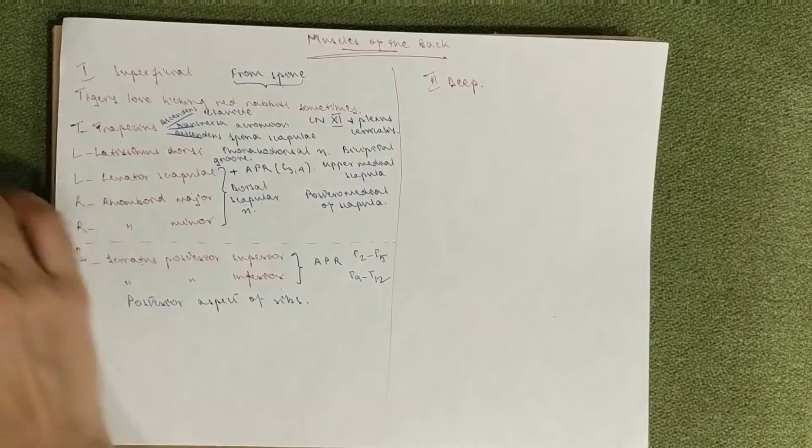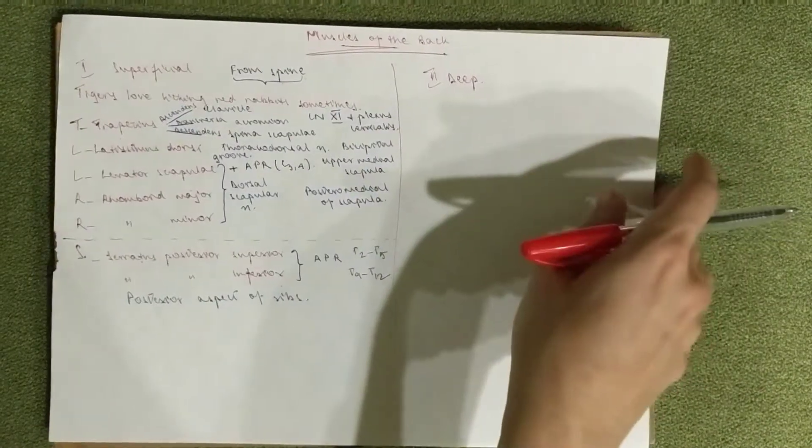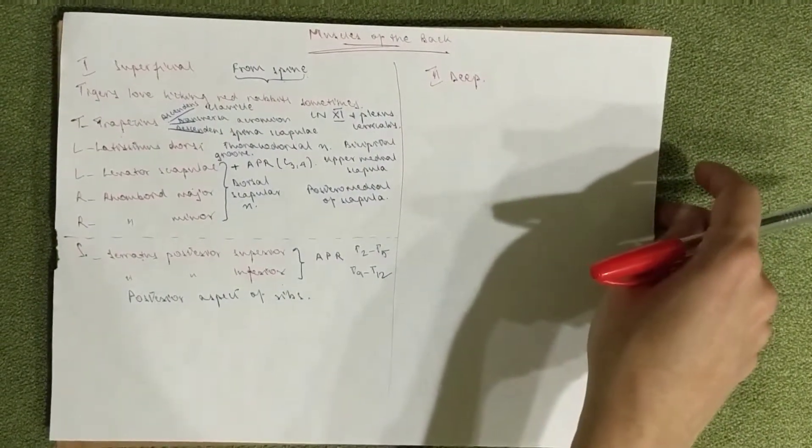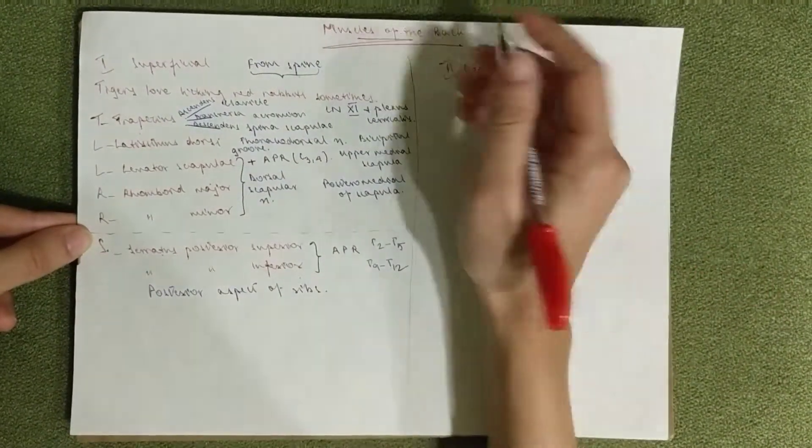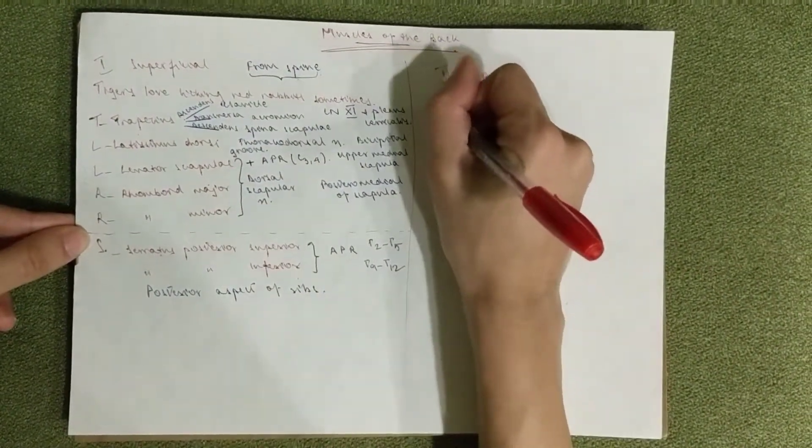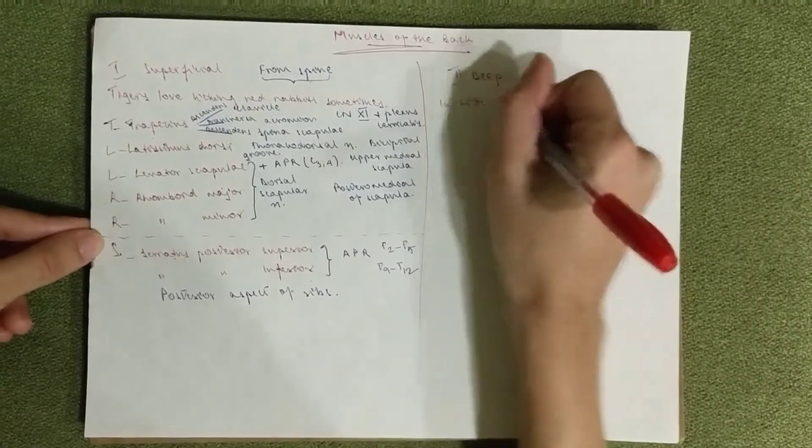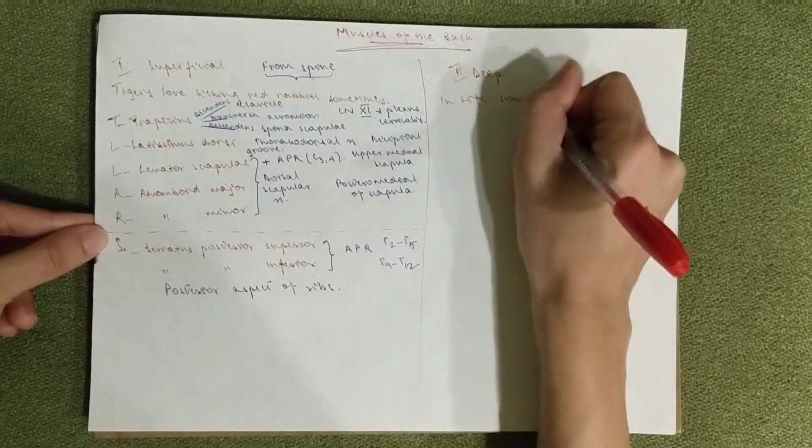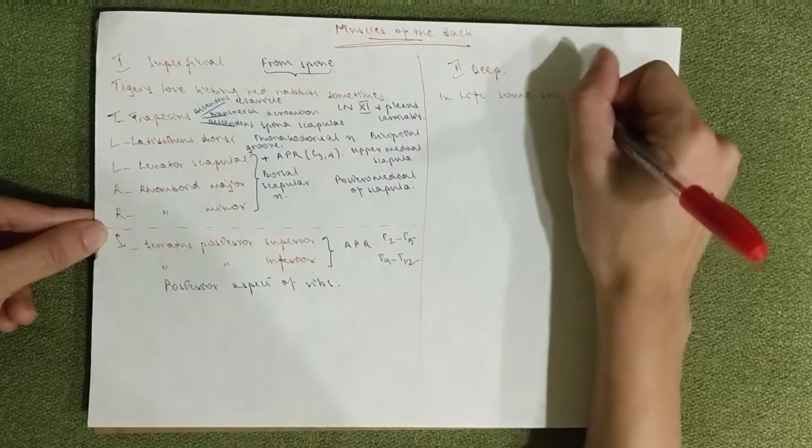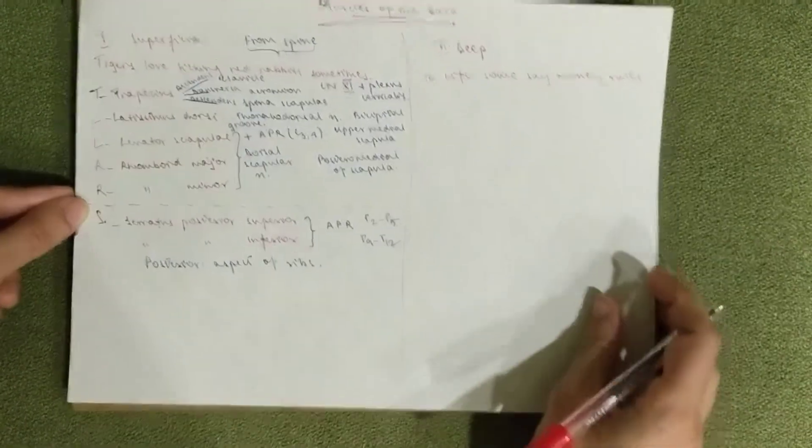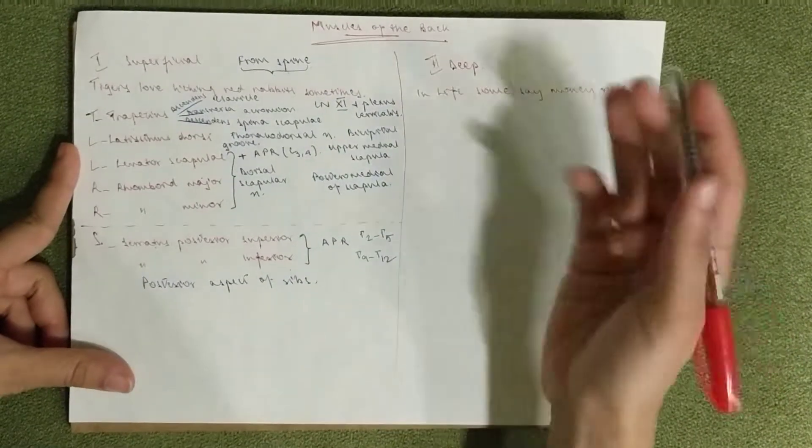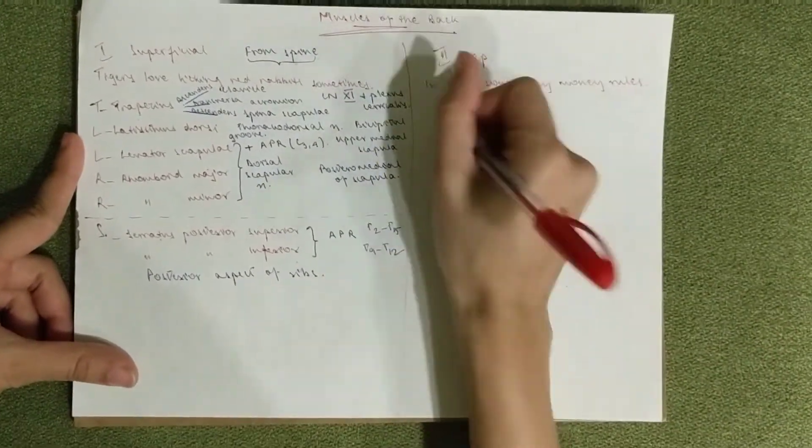Now we move on to the deep. There are quite a lot of muscles, so I've only made a mnemonic for the important ones. It goes something like: in life, some say money rules.